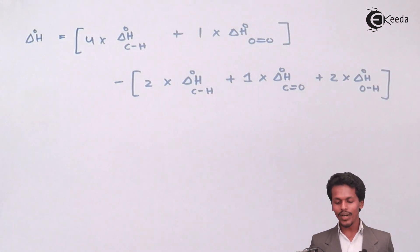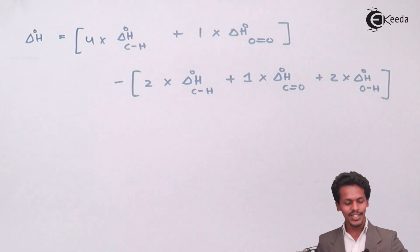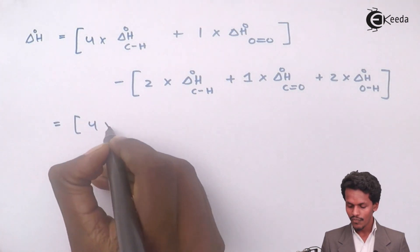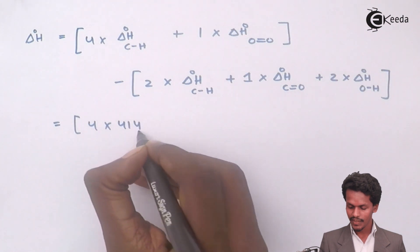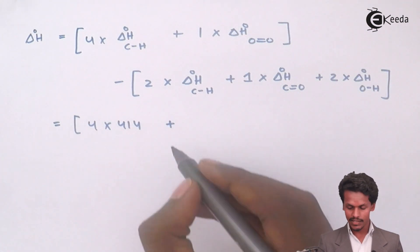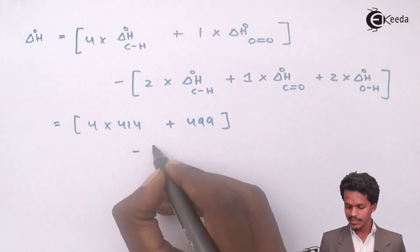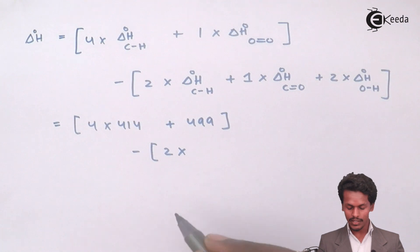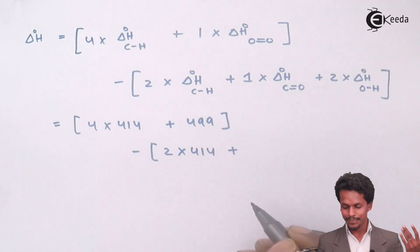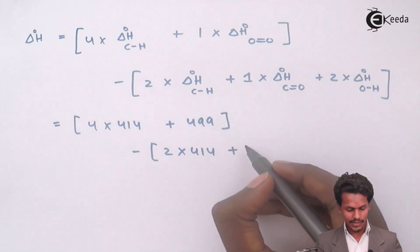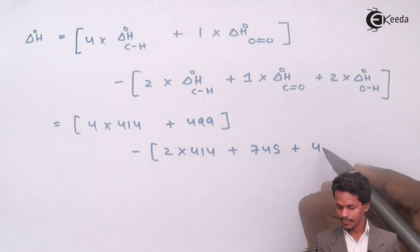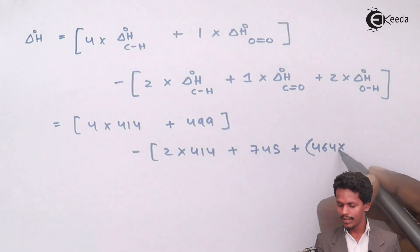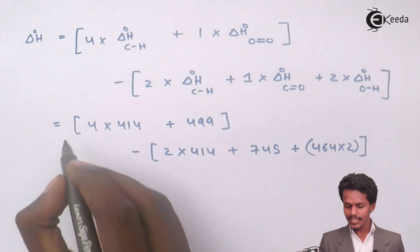Now substituting the values: delta H = [4 × 414 + 1 × 499] minus [2 × 414 + 1 × 745 + 2 × 464]. The reactant bond enthalpies sum to 2155 kJ, and the product bond enthalpies sum to 2501 kJ.